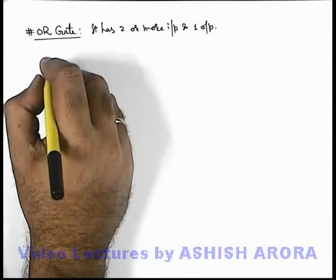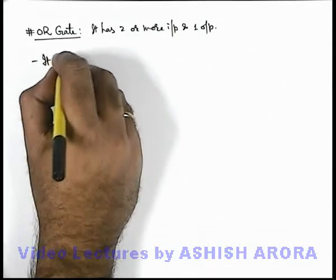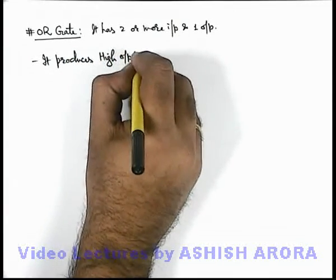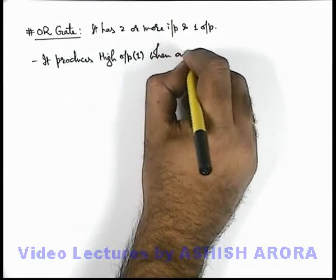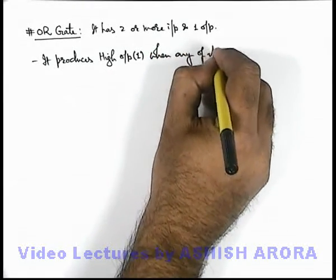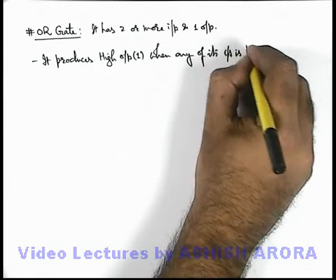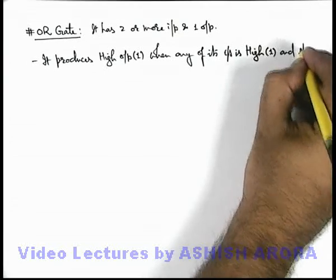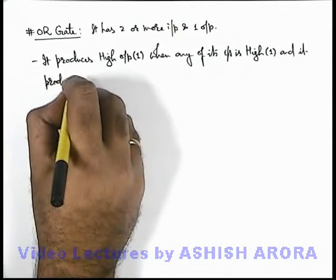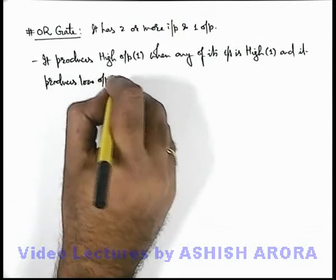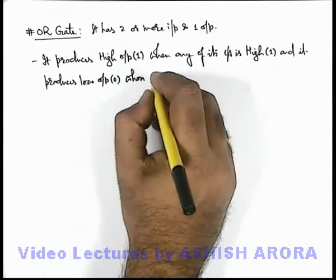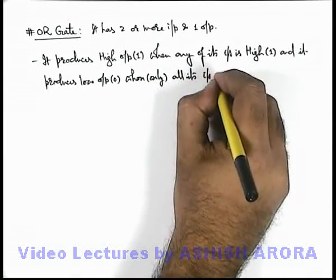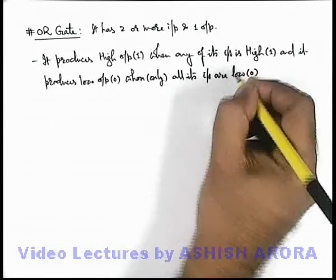Its basic functioning logic is: when any of its input is high, that is at state 1, it produces high output. It produces low output, that is zero state, only when all its inputs are low, at zero state.